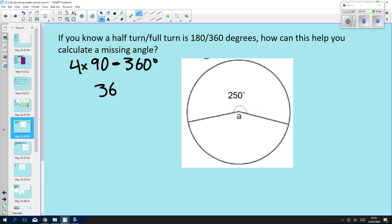Therefore, if I want to figure out that missing bit, all I need to do is take the angle that I know and subtract it from 360. So A is a 110-degree angle.